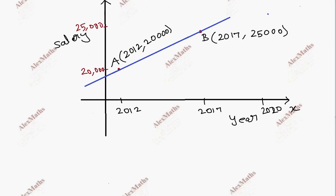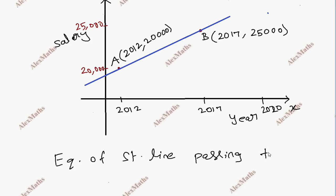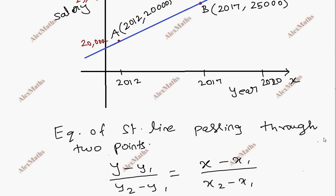Now we have an equation based on this. Let's use the two-point formula — the equation of a straight line passing through two points. So this is the formula.